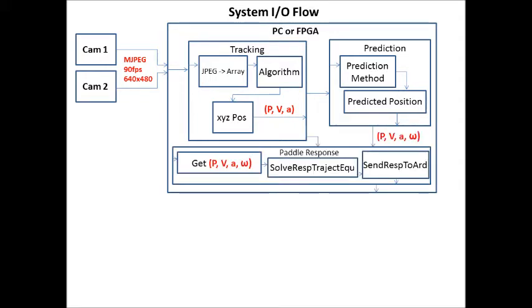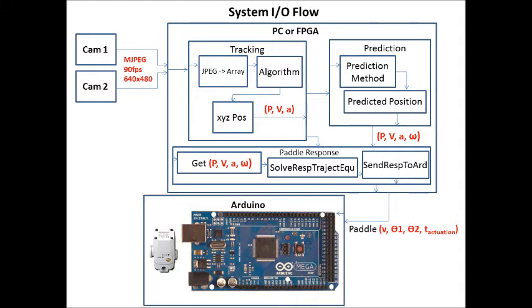The paddle response system grabs information from the prediction system to solve trajectory equations and sends a response to the Arduino. That response is going to have the velocity, theta1, theta2.